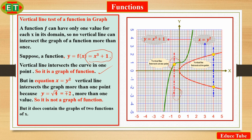But the parabola x = y² is not the graph of function of x. Because we can see the blue vertical line, it intersects the parabola in two points. Because y = √4 = ±2, more than one value.